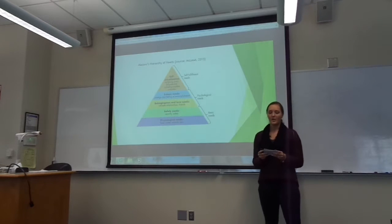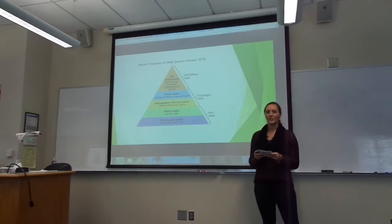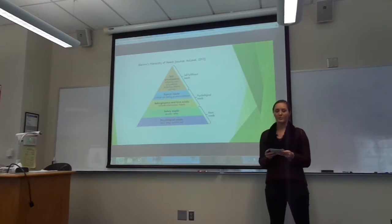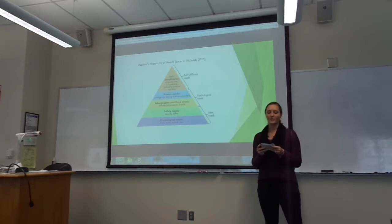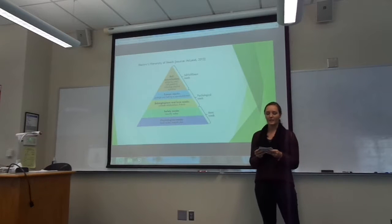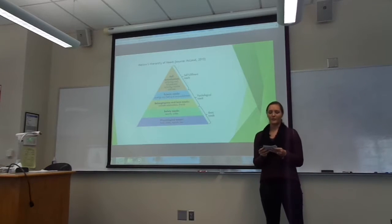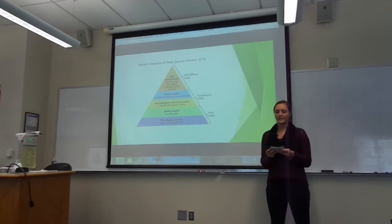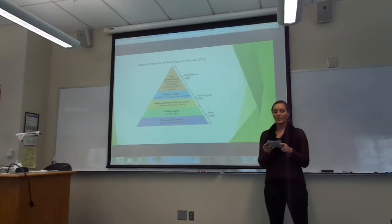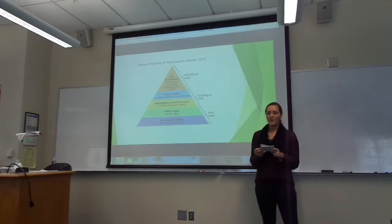In Maslow's paper, A Theory of Human Motivation, he stated that he believes that humans start our lives at the bottom of the pyramid and work our way up. The basic needs of the first tier are necessary for survival and must be fulfilled to reach the higher tiers. Once one is complete, man's goal is to reach the next, providing the motivation to keep climbing the pyramid.